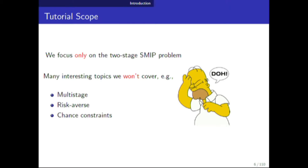I'm going to focus specifically on two-stage stochastic integer programming. If you were here expecting chance-constrained, multi-stage, or risk-averse integer programming — sorry. The methodology for two-stage is also useful for those other cases, but I'm going to stay focused just on the two-stage model.